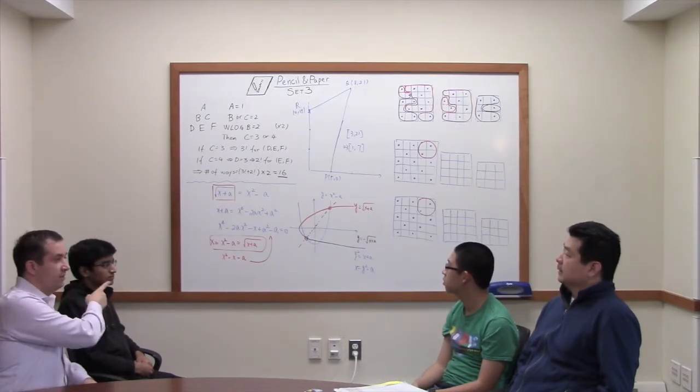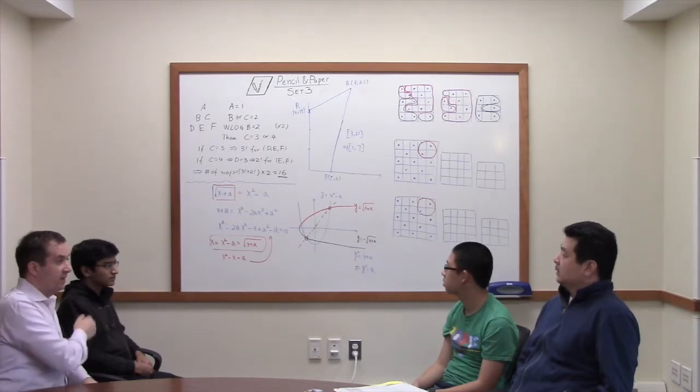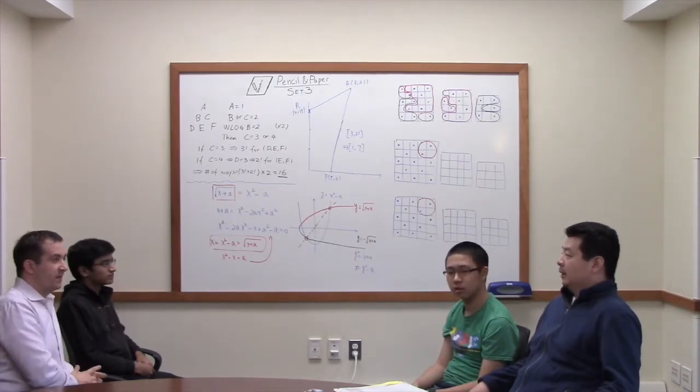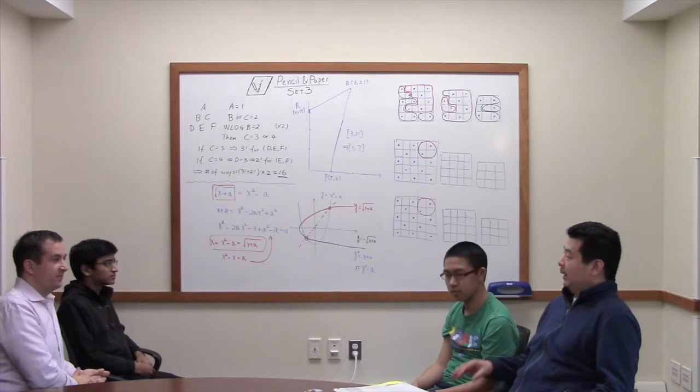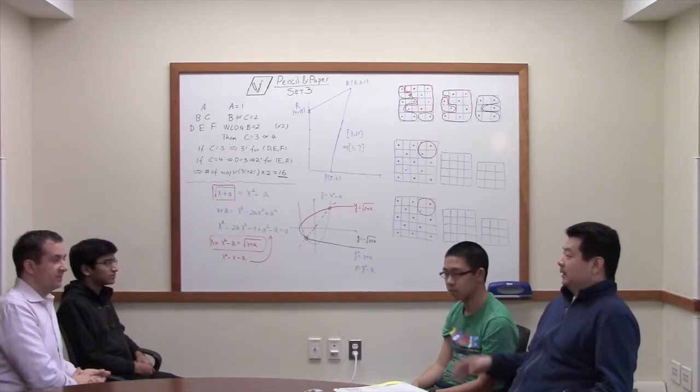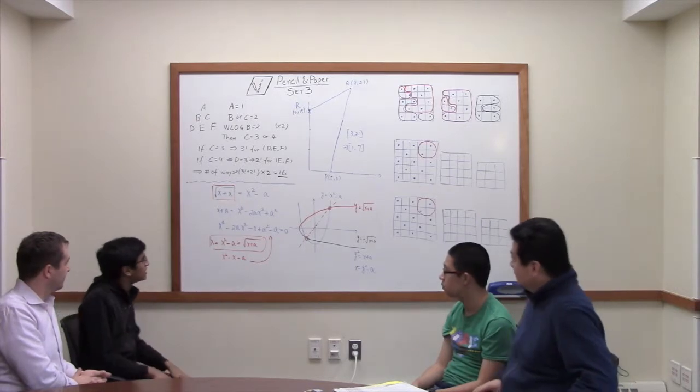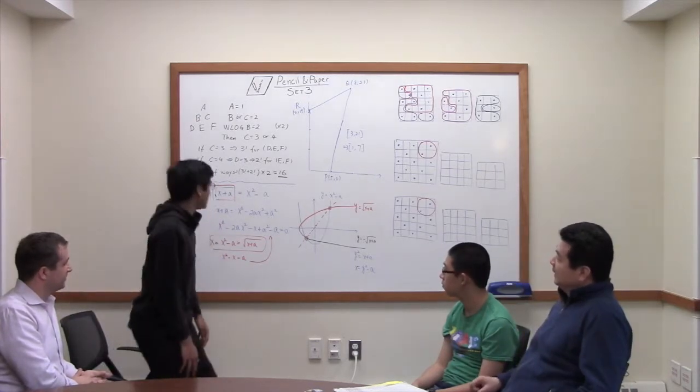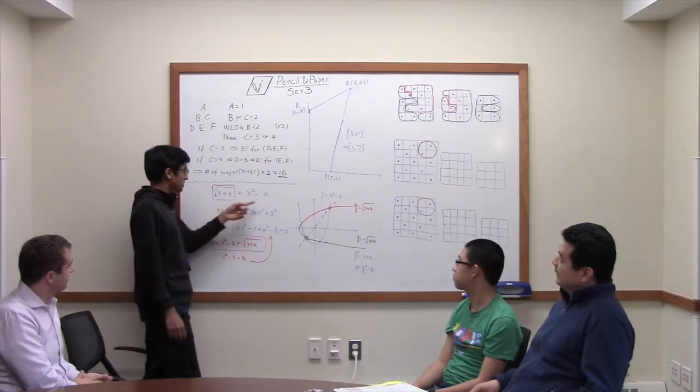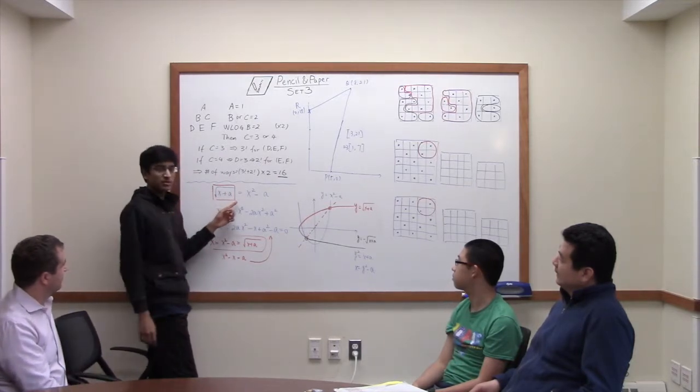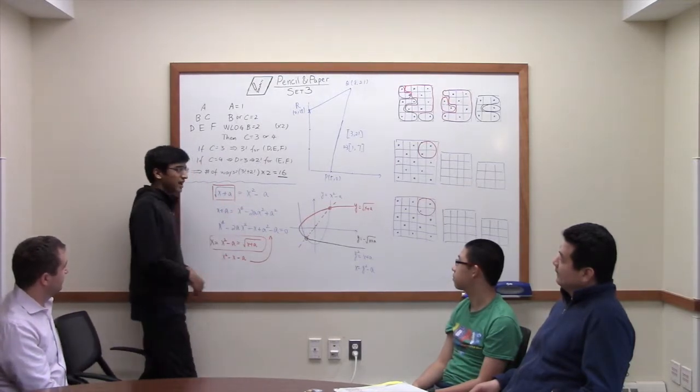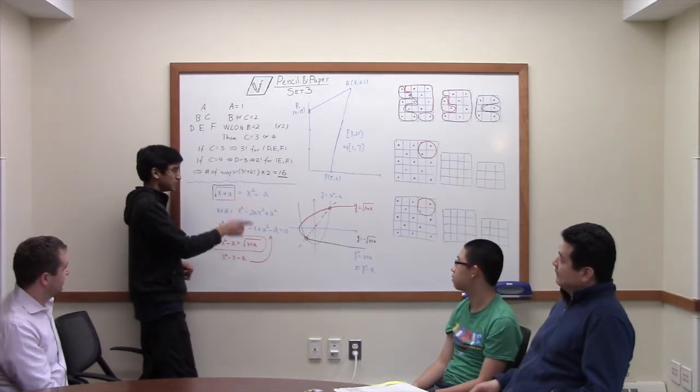But first I think we want to mention the problem that was in the last episode. Yes, I don't think we made it clear to our audience what we mean by the symmetry also leads to the factoring. So maybe if you want to go ahead and tell us what's going on. Sure. So the problem we had last week was this equation, the square root of x plus a equals x squared minus a, and we're trying to find the solutions for x in terms of a.